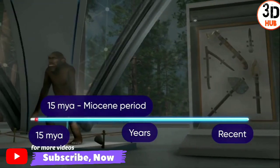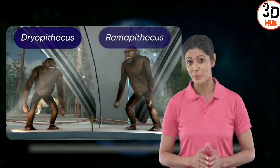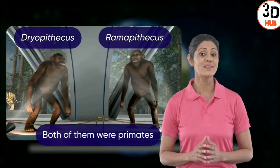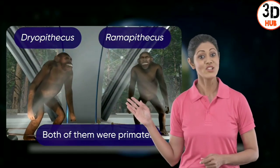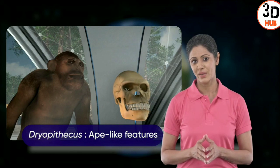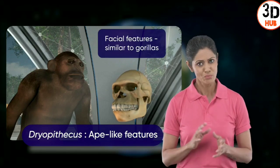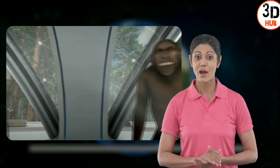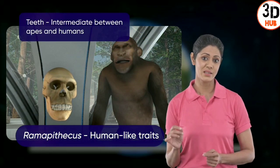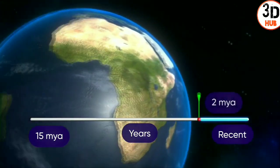During the Miocene period, the ancient Dryopithecus and Ramapithecus existed. Both were hairy and moved around much like gorillas and chimps do today. The Dryopithecus had more ape-like features — teeth resembling those of chimps and facial features similar to gorillas. Ramapithecus showed more human-like traits, with teeth in an intermediate state between other apes and humans.